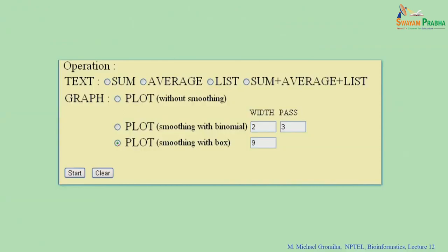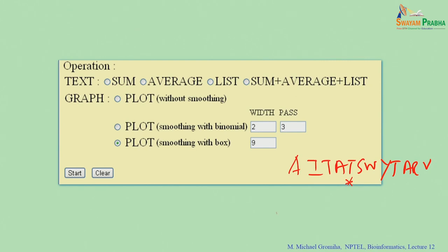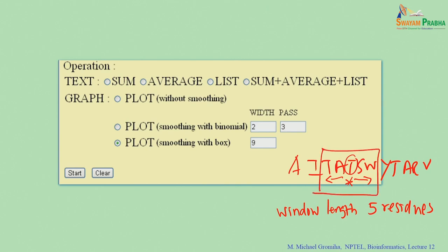If you cannot infer anything from the single-residue plot, you can apply window averaging. If you have a window length of 5 residues, the window considers 2 residues from the left side and 2 from the right side, with a central residue. They calculate the average value and plot it for the central residue. For the first residue, there are no left-side residues, so only residues with a full window of 5 can be plotted.